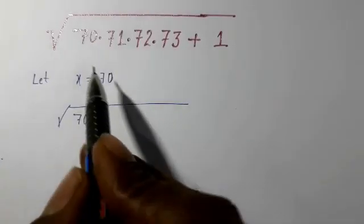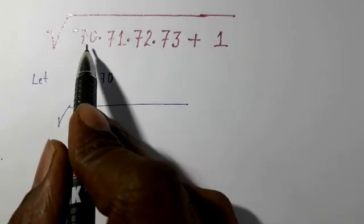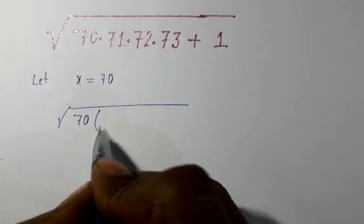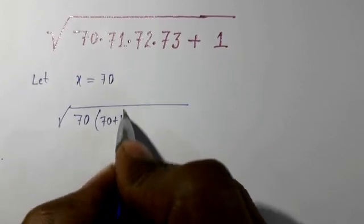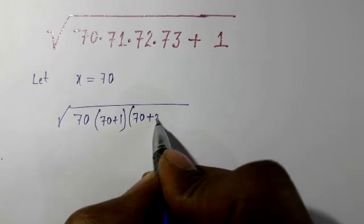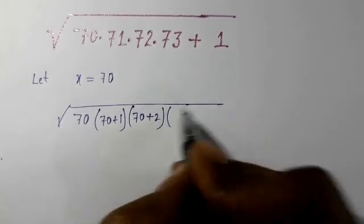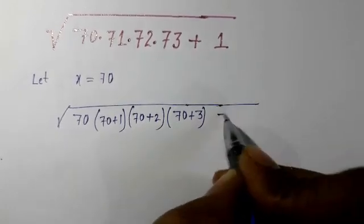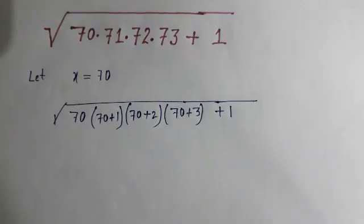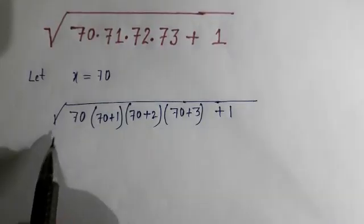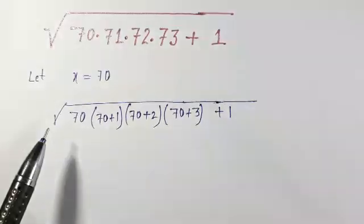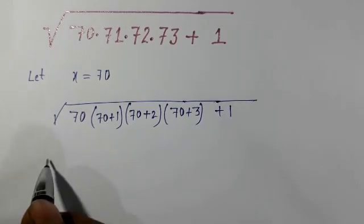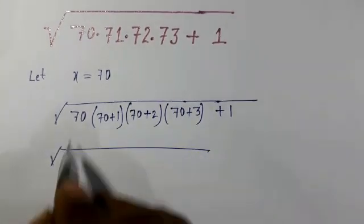Here we are seeing 70, so we can put 70 and then 70+1 and then 70+2 and 70+3 plus 1. Therefore I'm going to put here x, so I have √(x(x+1)(x+2)(x+3) + 1).